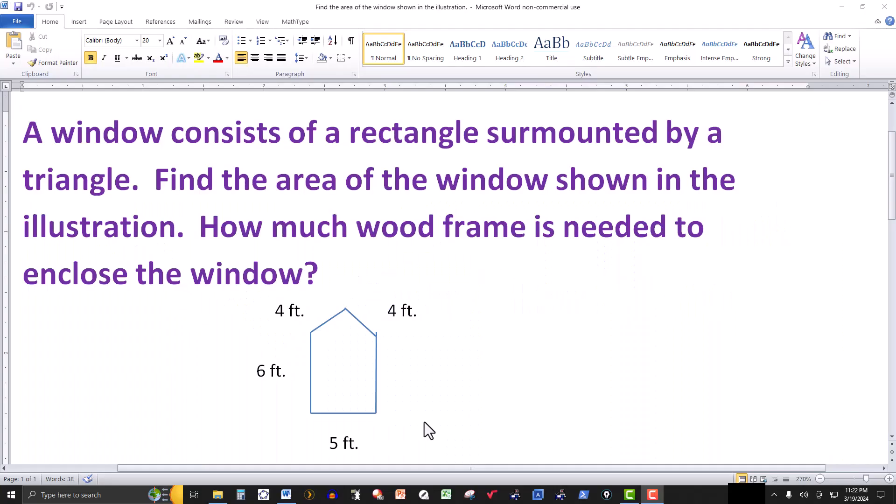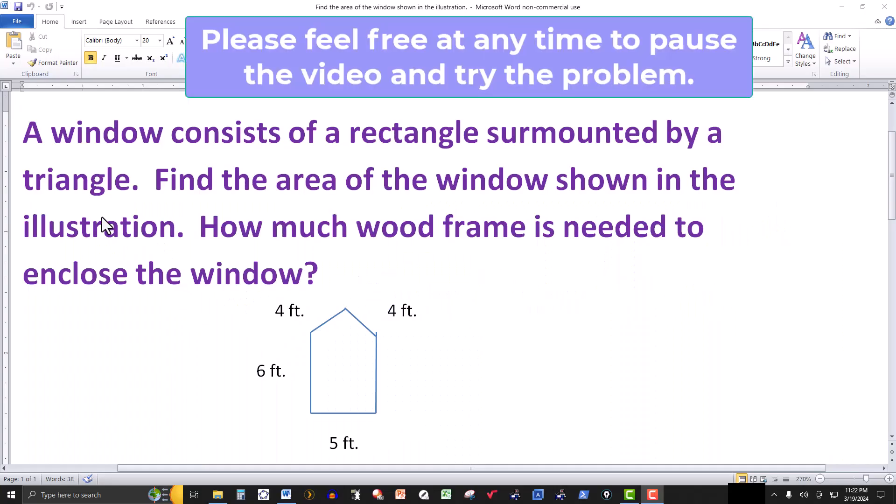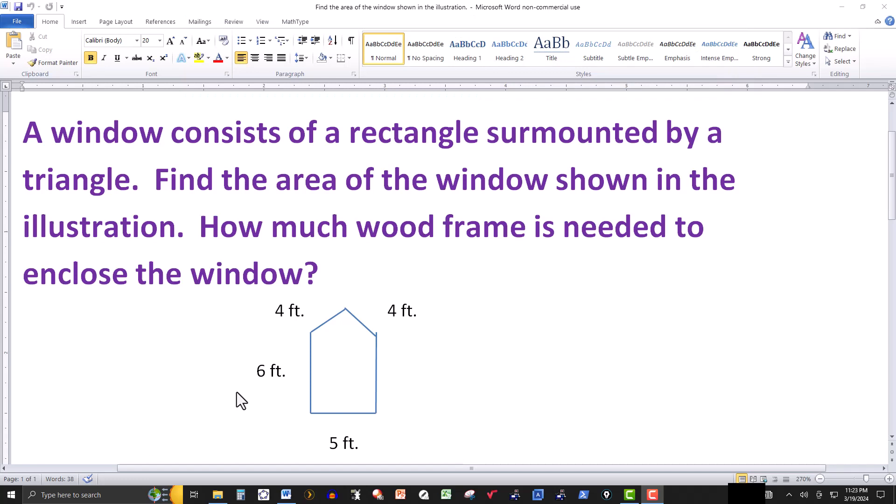In this video we have a word problem to solve. So let's go through this. A window consists of a rectangle surmounted by a triangle. Find the area of the window shown in the illustration and how much wood frame is needed to enclose the window.